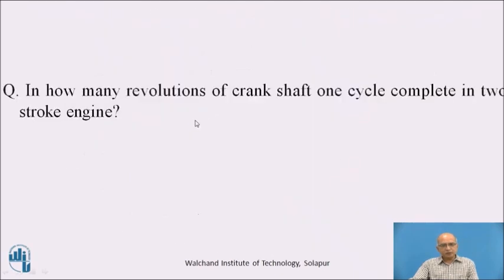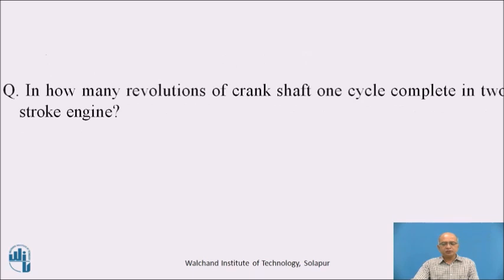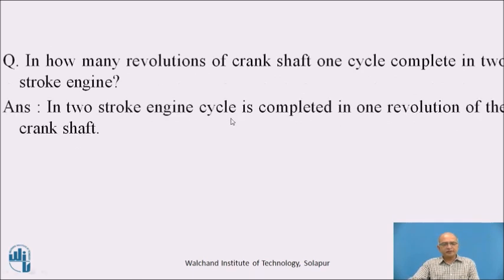Pause the video and think about this question: in how many revolutions of the crankshaft does one cycle complete in a two-stroke engine? The answer is: the two-stroke engine cycle completes in only one revolution of the crankshaft, because the four strokes are combined. So one revolution of the crankshaft is required for completion of one cycle of the two-stroke engine, whether it is an SI engine or a CI engine.